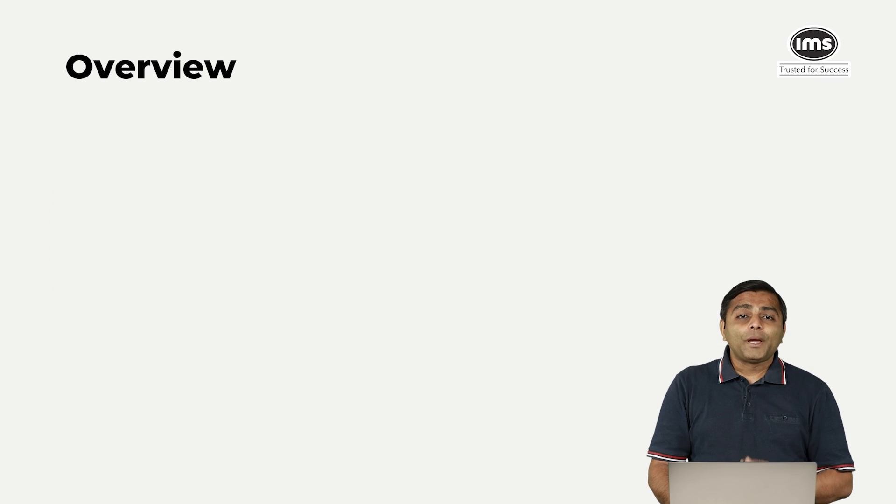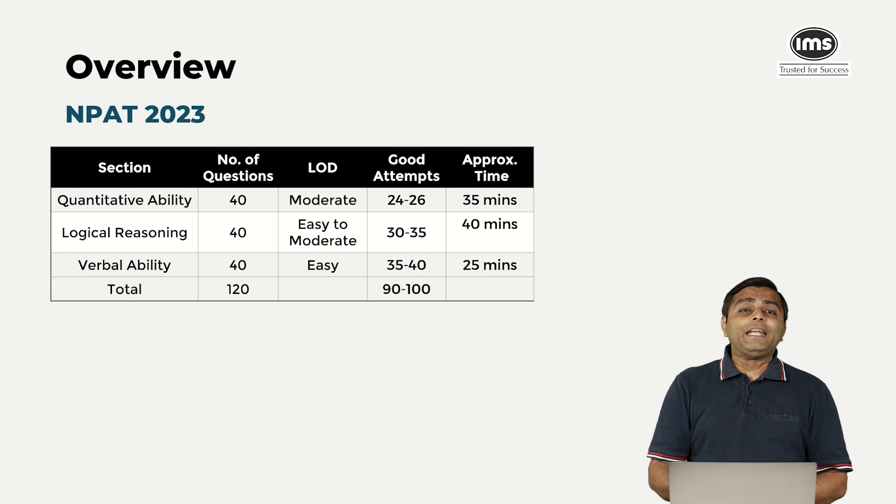Having a quick overview of how NPAT 2023 was, you can refer to the table. Quantitative ability, as you know, had 40 questions. The level of difficulty we thought was moderate. Anywhere around 25 would be good attempts in this section for this year. We recommend that you don't take more than 35 minutes for this section.